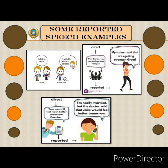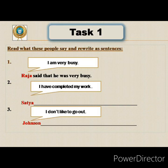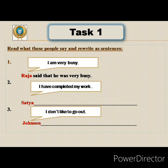Now we pass on to Task 1. The first model sentence: 'I am very busy.' The subject given is Raja. Raja said that he was very busy. 'I' is changed to 'he,' and 'am' is changed to 'was' because 'said' is past tense. So: Raja said that he was very busy.